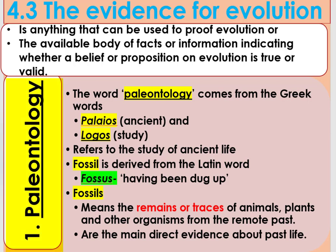The first source of evidence for evolution is paleontology. The word paleontology comes from Greek words: paleos, which means ancient, and logos, meaning study — referring to the study of ancient life forms. Paleontology, to provide evidence for evolution, significantly depends on fossil records.